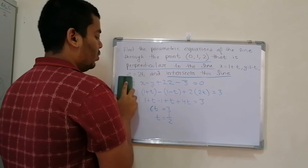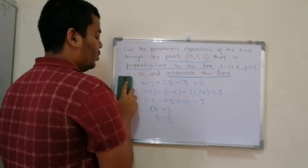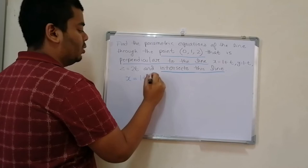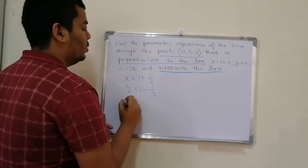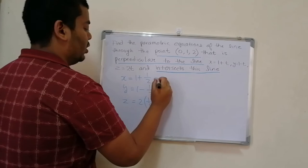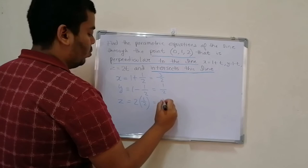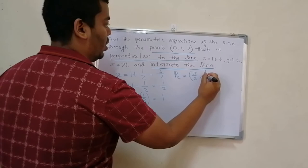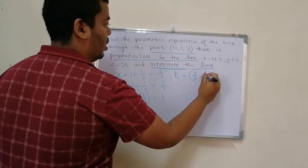Substituting t = 1/2: x = 1 + 1/2 = 3/2, y = 1 - 1/2 = 1/2, and z = 2(1/2) = 1. So the common point between the given line and the line we want to find is (3/2, 1/2, 1).